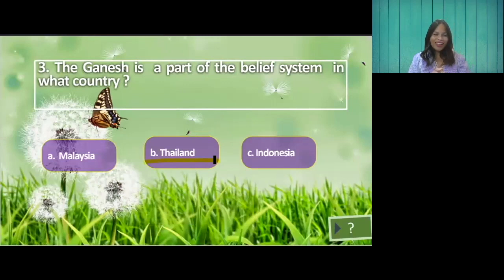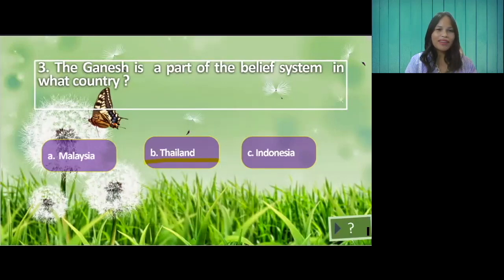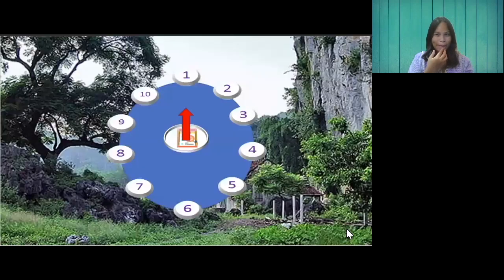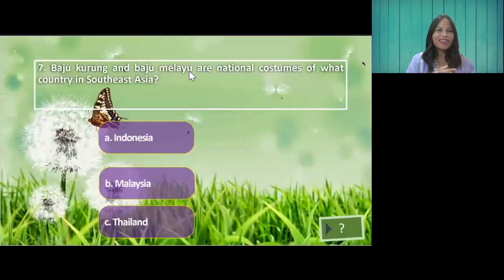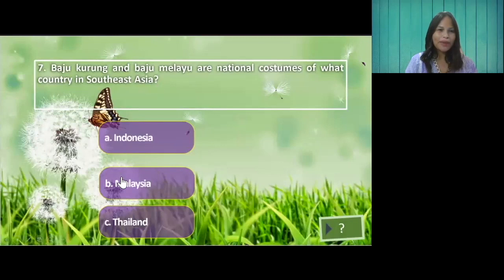Who got the correct answer so far? Very good students if you've got correct scores right now. Let's proceed to the next question and spin again. We have number seven. Baju Kurong and Baju Melayu are the national costume of what country in Southeast Asia? A. Indonesia. B. Malaysia. C. Thailand. The answer is letter B — Malaysia.